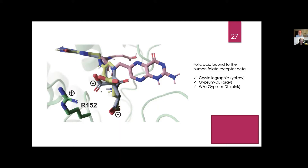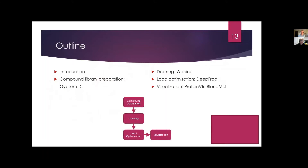Gypsum correctly deprotonated the carboxylate group, enabling the electrostatic interaction with arginine in the pocket. When we used another program that only assigns 3D coordinates without accounting for alternate ionization states, the docked pose shown in pink was completely wrong — a hydrogen had been added to the carboxylate, so it lacked the negative charge needed to interact with arginine. Assigning the correct protonation state was critical for the correct pose. Our paper showed that properly accounting for ionization states generally improves accuracy of pose prediction.